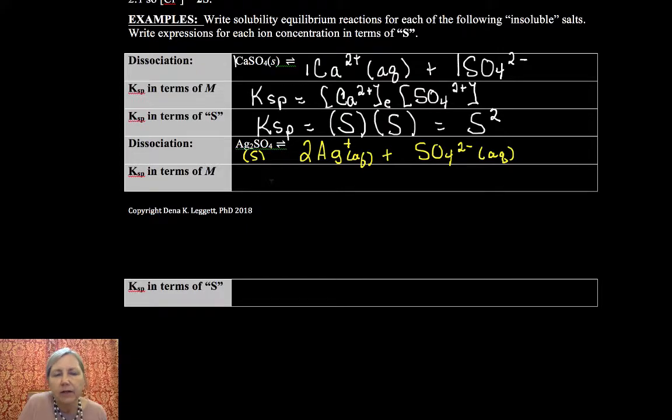Okay. Now, Ksp in terms of molarity. Ksp is going to be silver ion plus, because we always include aqueous, but this is squared, times my sulfate ion to the first.